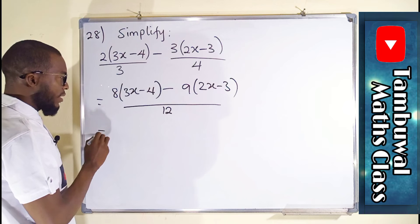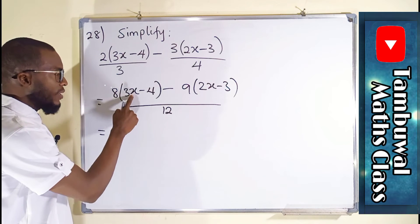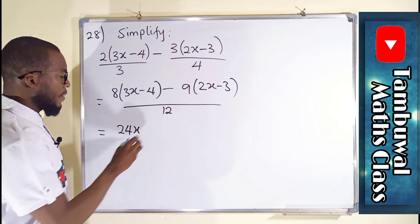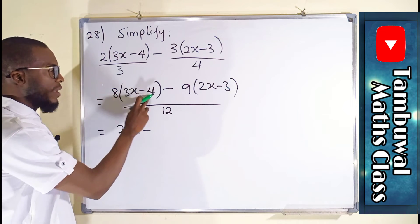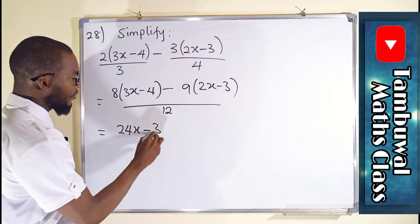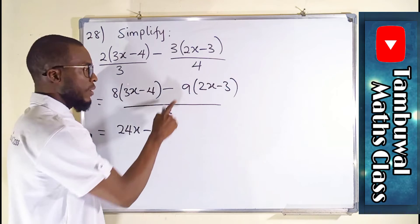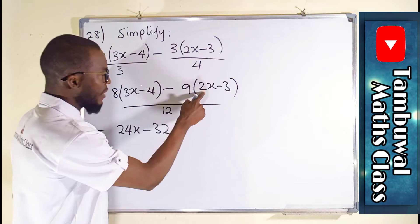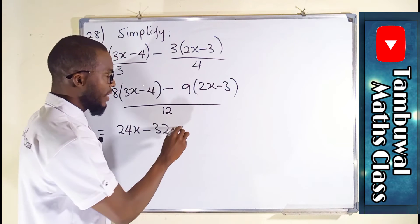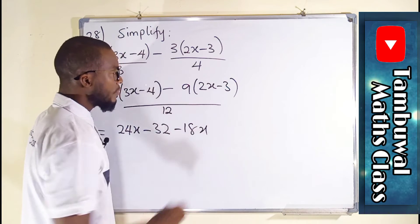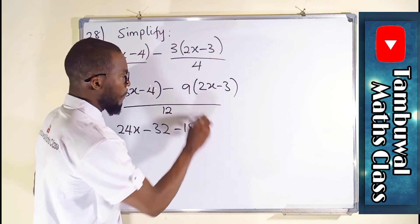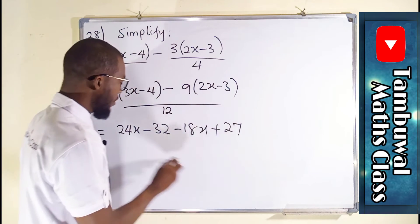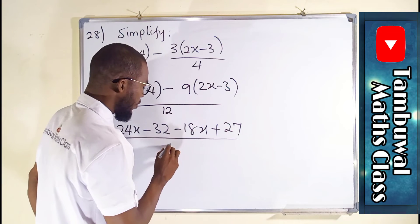Now we are free to expand. 8 times 3x is 24x minus 8 times 4 is 32. Use the negative 9 to expand this parenthesis. Negative 9 times 2 is negative 18x. Minus minus is plus. 9 times 3 is 27. All divided by 12.